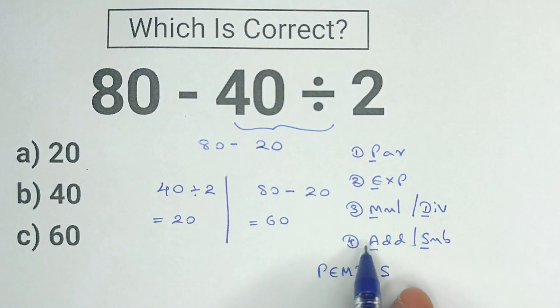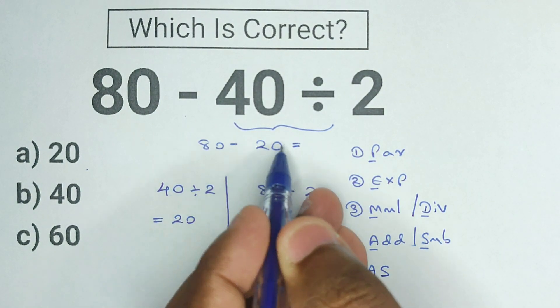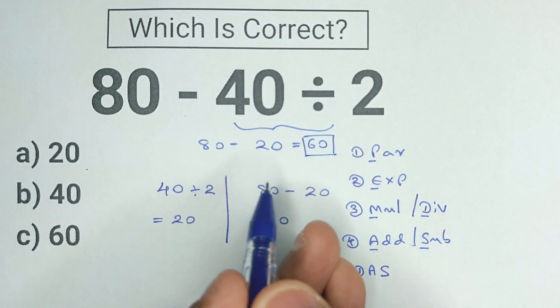And now we can move on to our last order of operation, adding and subtracting. 80 minus 20 is equal to 60. So our final answer for this expression is equal to 60.